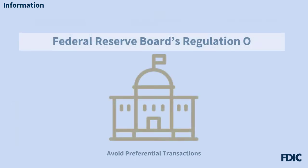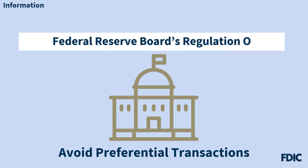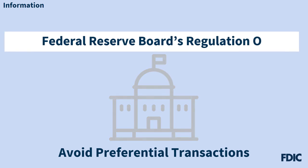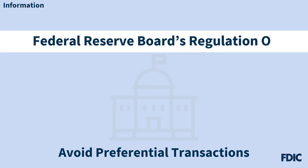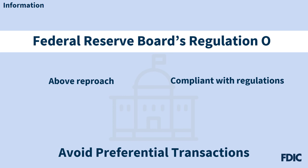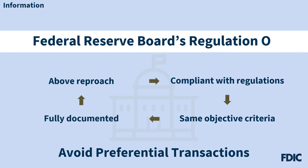There is one last item of importance for new board members: the need to avoid all preferential transactions involving insiders or their related interests. This is addressed in the Federal Reserve Board's Regulation O. Financial transactions with insiders must be above reproach, in full compliance with all laws and regulations concerning such transactions, and judged according to the same objective criteria used in transactions with ordinary customers. The basis for decisions regarding insider transactions must be fully documented.